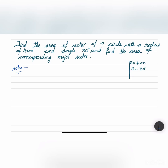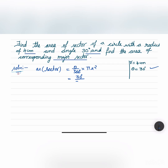Namaste everybody, welcome to my channel. Find the area of a sector of a circle with radius 4 centimeters and angle 30 degrees, and find the area of the corresponding major sector. The area of a sector is equal to theta by 360 degrees into pi r squared. Now theta is given as 30 degrees, so it is 30 by 360 degrees into 22 by 7.